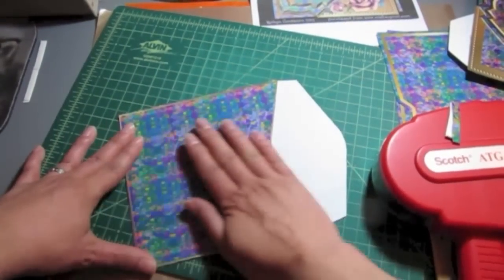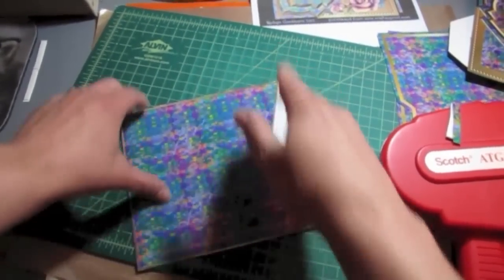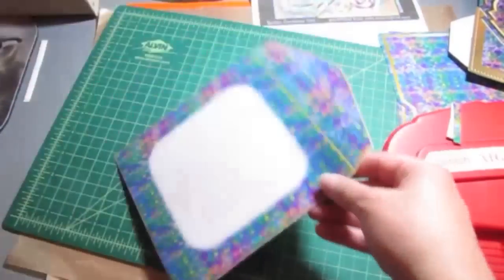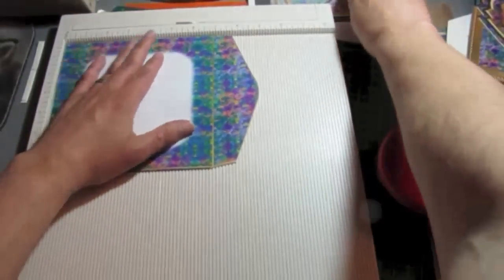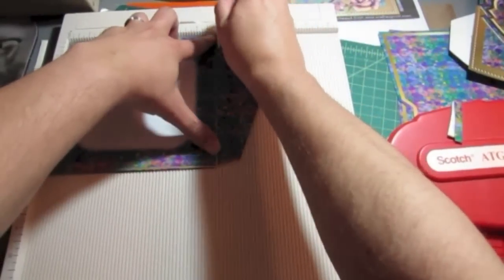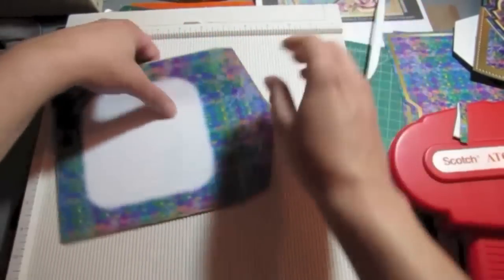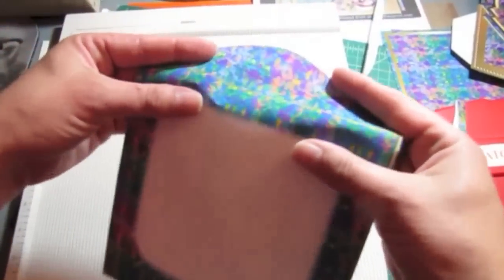So then we just line this up like so. Oh, there goes my light again. I think my husband only paid half the electric bill this time. Oh, I forgot to fold it up here. So let me do a quick score along there and then we're done. And there's the envelope and now onto the card.